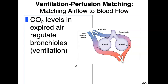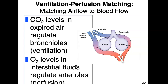Carbon dioxide levels in the expired air regulate the bronchioles, regulate ventilation — how much you're going to be breathing. So when carbon dioxide levels go up, you're going to breathe more deeply and more frequently. Oxygen levels in the interstitial fluids are going to regulate the arterioles, regulating that perfusion — whether to irrigate more or less.